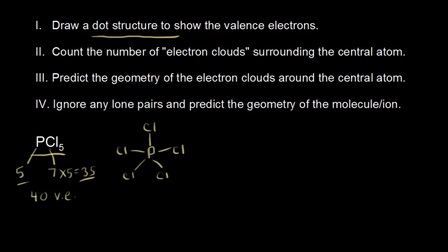If we see how many valence electrons we've drawn so far: 2, 4, 6, 8, and 10. So 40 minus 10 gives us 30 valence electrons left over. We start putting those leftover electrons on our terminal atoms — the chlorines. Each chlorine follows the octet rule, so each chlorine needs 6 more electrons. 6 times 5 is 30, so we've now represented all 40 valence electrons on our dot structure.